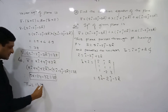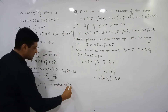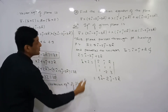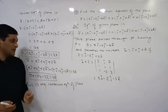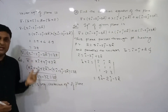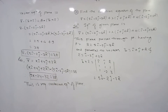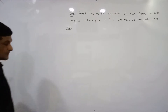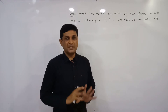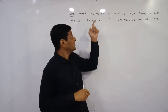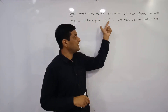This is the required Cartesian equation of the plane. We were given the plane in parametric form, first converted it to vector form, and then simply converted the vector form into Cartesian form. Now we move on to question number 11, the last example from this exercise.